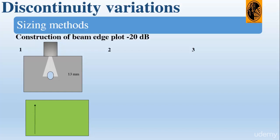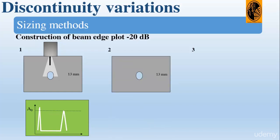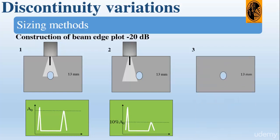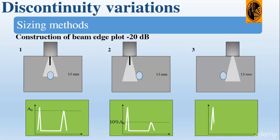Second step: move the probe to one side until the signal drops to 10% of the full screen height — 10% of full screen height corresponds to 20 dB — and mark the center of the probe on the block, as shown in the animation. Third step: move the probe to the other side of the hole until the signal drops to 10% (20 dB), and again mark the center of the probe on the block. Use the distance between these marks to plot the beam on graph paper.